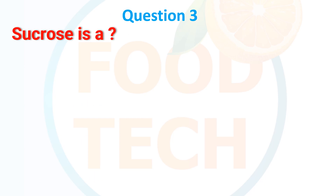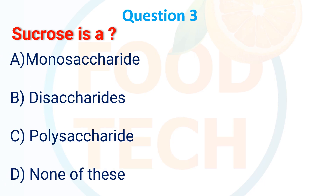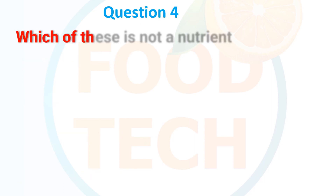Question 3: Sucrose is — A. Monosaccharide, B. Disaccharide, C. Polysaccharide, D. None of these. The answer is B. Disaccharide.